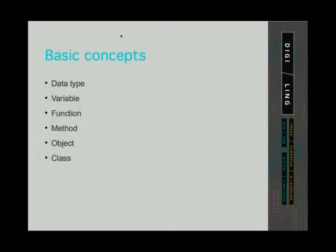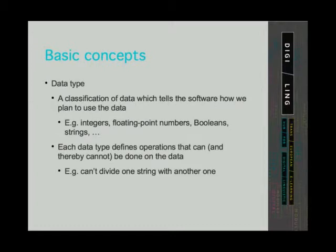Let's explain some other basic concepts like data types, variables, functions, objects, and so on. A data type is a classification of data which tells the software how we plan on using the data. Data types we will get to know are integers, floating point numbers, strings, and so on. Data types tell us what operations can be done on the data and what operations cannot be done. For example, we can't divide one string by another, and we can't do addition with boolean values like true or false — to do division or addition, we need numbers.